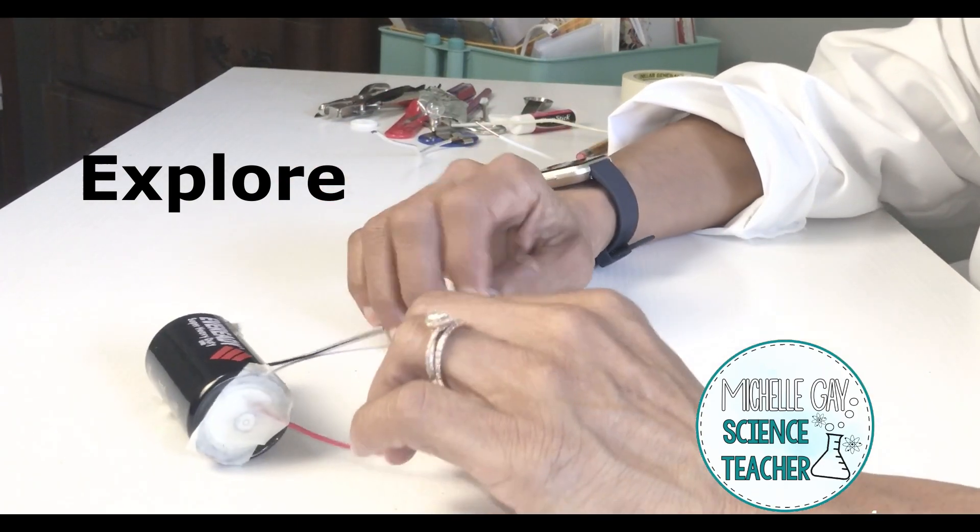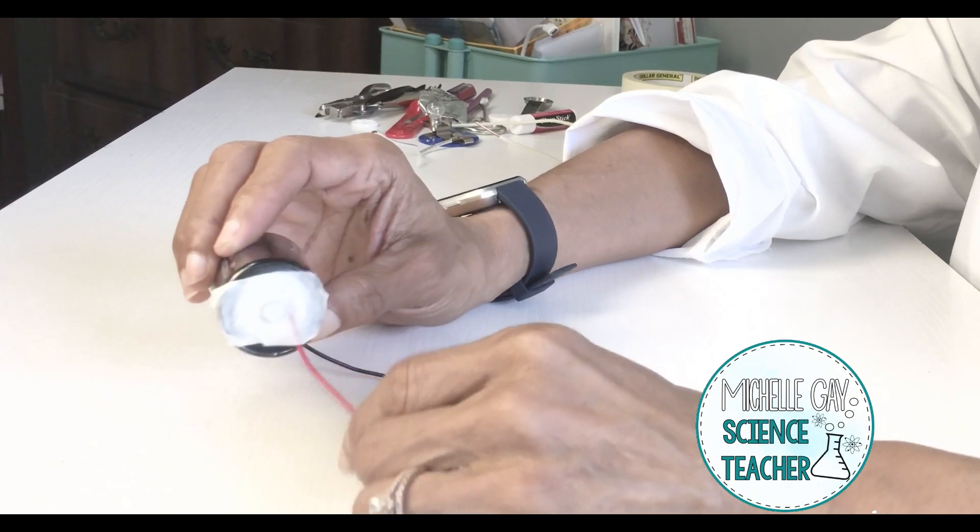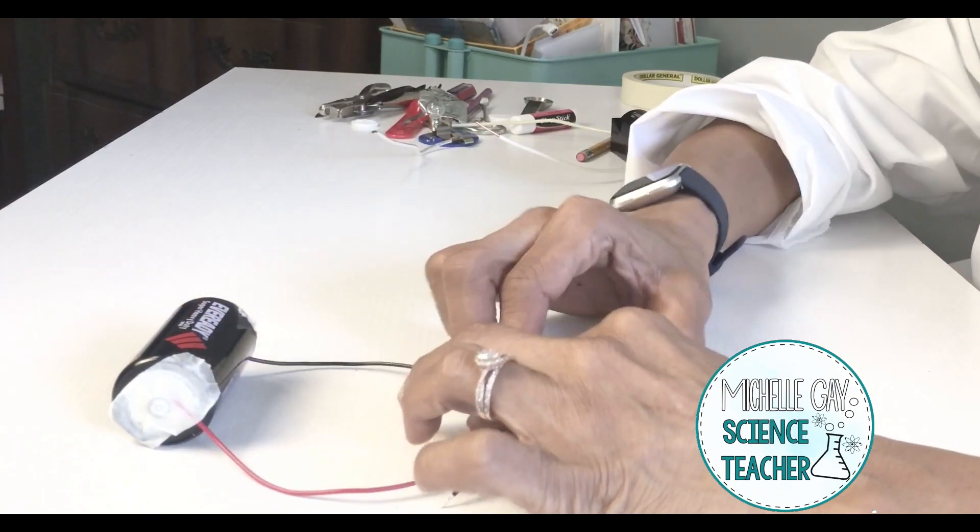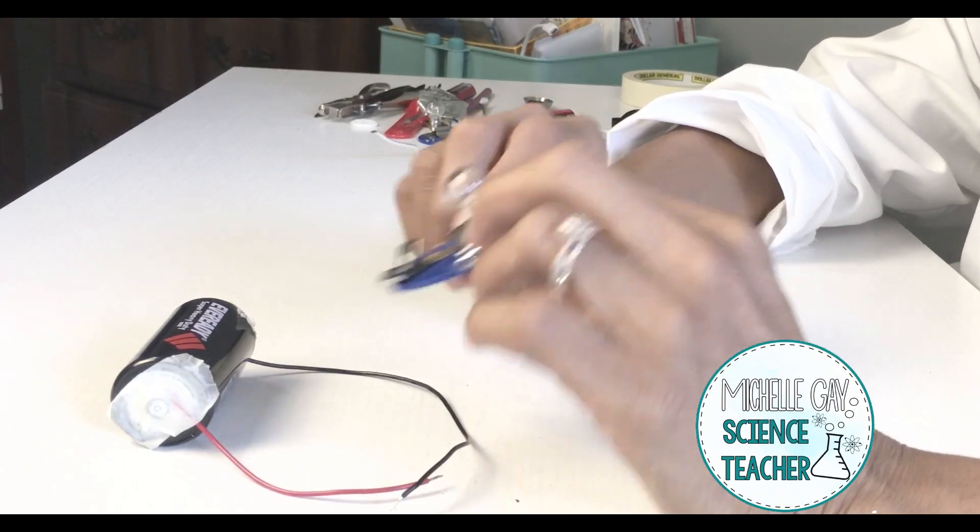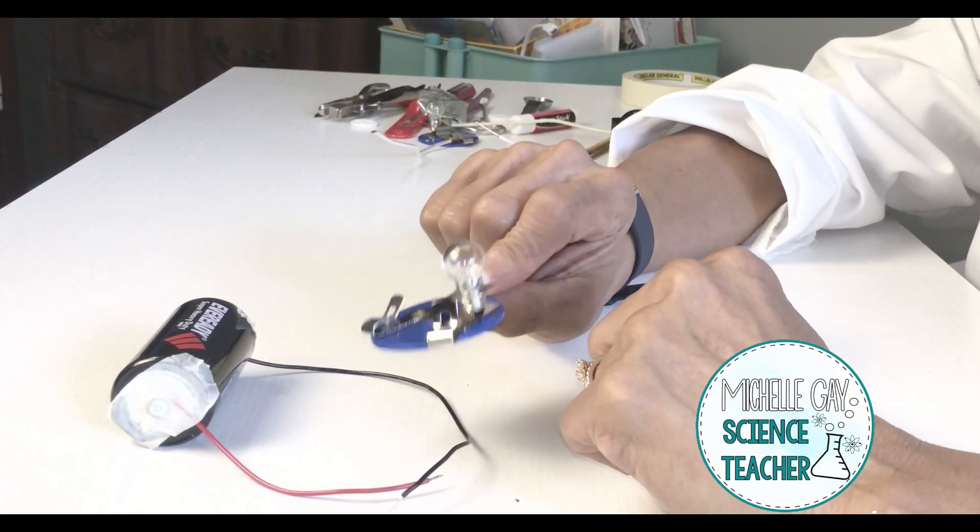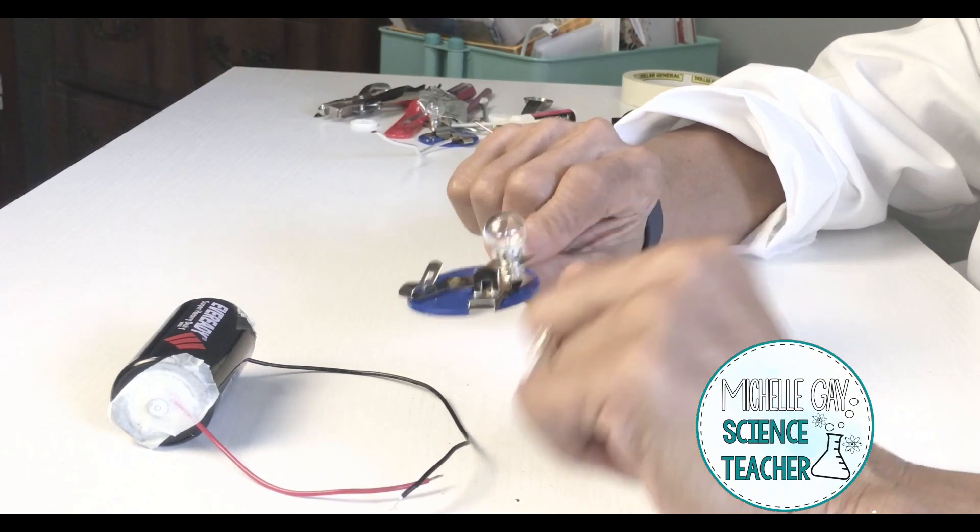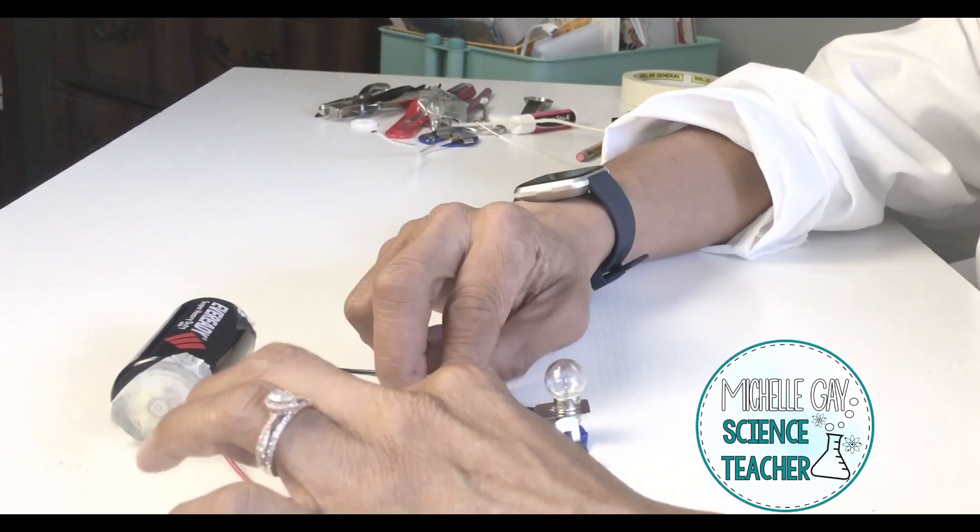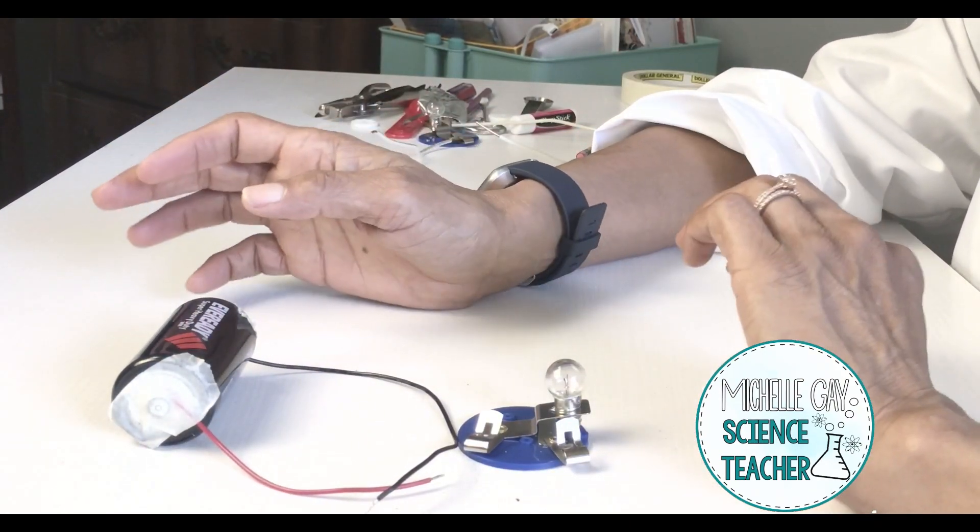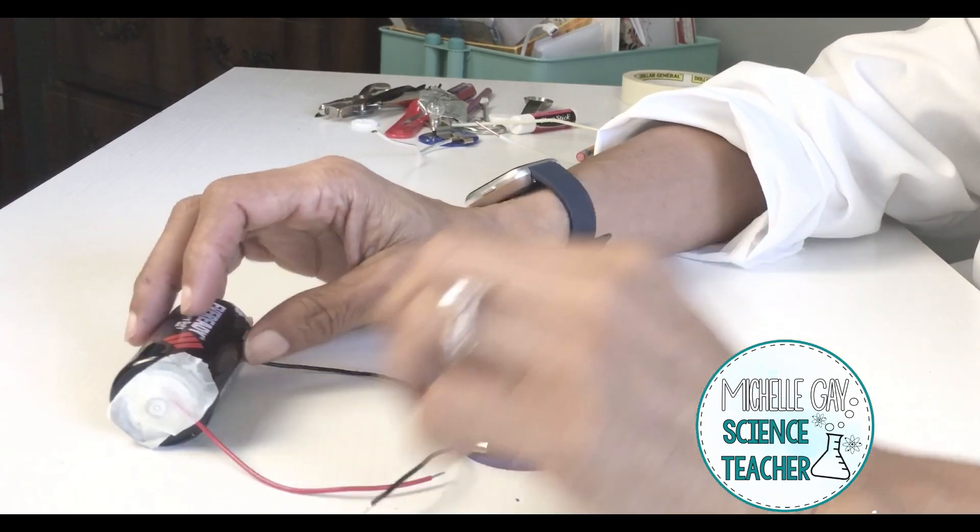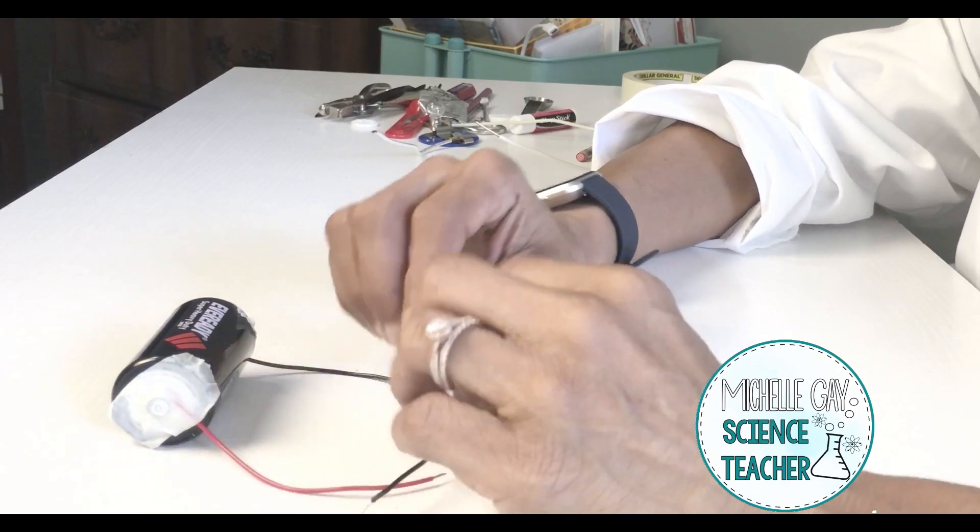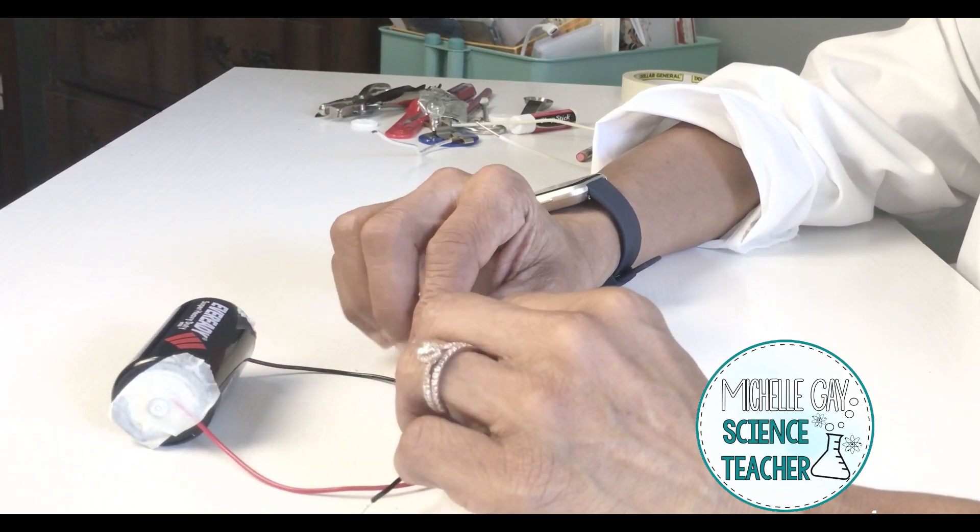Let's explore and make a simple circuit. So you need your two wires, your D cell battery, you will need your light bulb, and a light bulb holder if you have one. If you don't it still should work. What is a complete circuit? A complete circuit means that you're going to have a complete circle where everything is touching together.